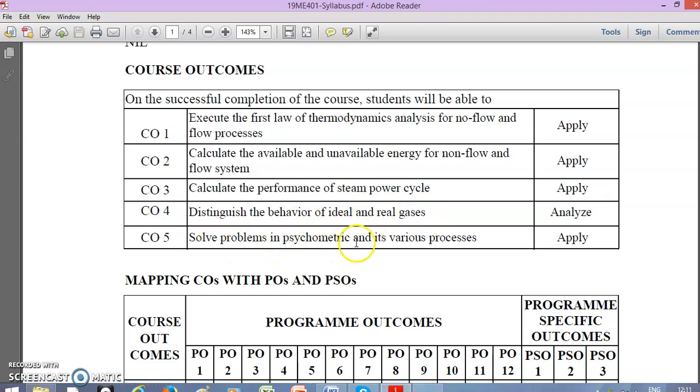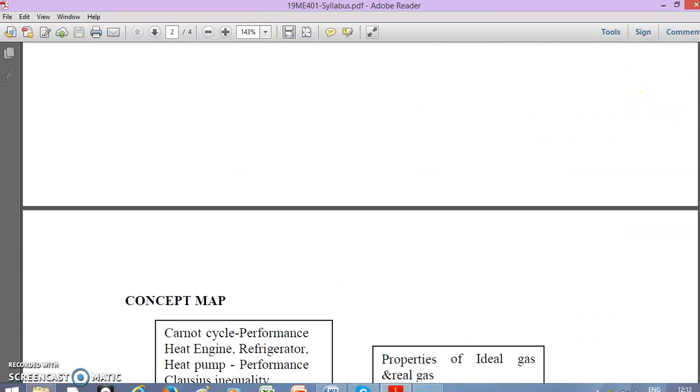Course outcome 5 is to solve problems in psychrometry and its various processes. Psychrometry is the study of moist air - air that contains water vapor. All air in the atmosphere is moist air. If there is no water vapor in the air, we call it dry air, in which humans cannot live. The Bloom's taxonomy level is apply, so we'll get apply level problems on psychrometric topics. Now we move on to the course content.